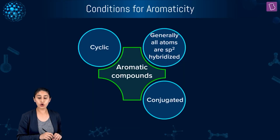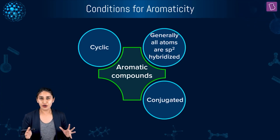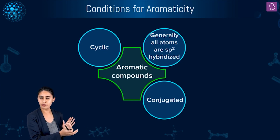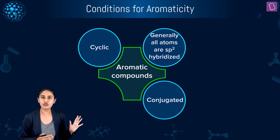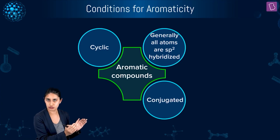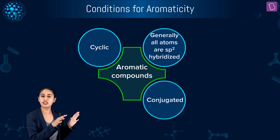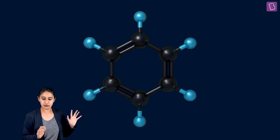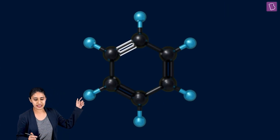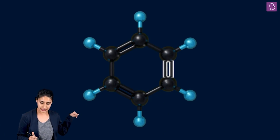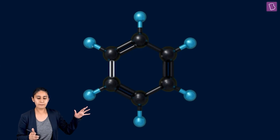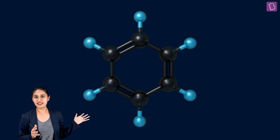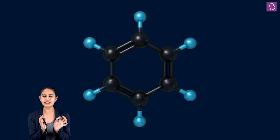Third condition is a conjugated system. You are well acquainted with conjugated systems: double, single, double, single — where two double bonds are separated by a single bond. Conjugation is not restricted to just pi bonds; there can be conjugation of a lone pair with a double bond, or a positive charge with a double bond. In benzene, you can see a double bond, single bond, double bond, single bond, double bond, single bond — perfect conjugation of three pi bonds. So a conjugated system has to be there.